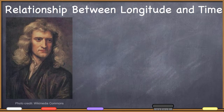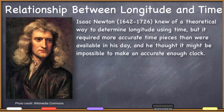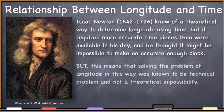Even as late as Isaac Newton, he pondered over this problem of determining longitude. Basically, he came to the conclusion that we were not going to ever be technologically sophisticated enough to produce timekeeping pieces — clocks that are accurate enough to be used in the determination of longitude. So they did have this knowledge of a theoretical way to compute longitude, but no practical way to do that.